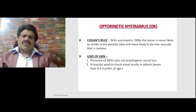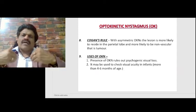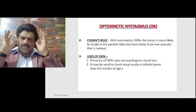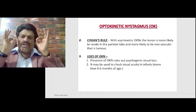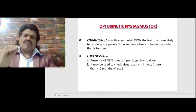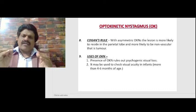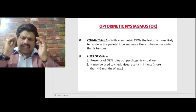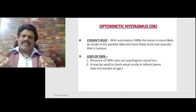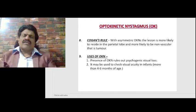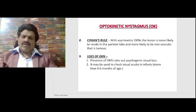The presence of optokinetic nystagmus rules out blindness. The moment a person is able to see, the optokinetic nystagmus becomes manifest. So if optokinetic nystagmus is present, the person is not blind. This is a very important test to distinguish organic from non-organic visual loss — its presence indicates the person is able to see the object well.